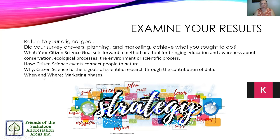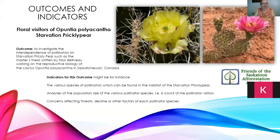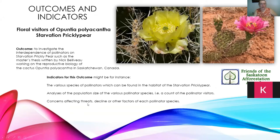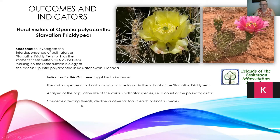One example of scientific output: Nick Bellaby from Saskatchewan used iNaturalist for his master's thesis on floral visitors to the Starvation Prickly Pear Cactus. He was able to identify which species visited this flower and do an analysis of pollinator population sizes — seeing which pollinators were in the area, which ones visited the cactus, which ones didn't and why, and any threats or declines affecting pollinator species that the Starvation Prickly Pear might depend on.